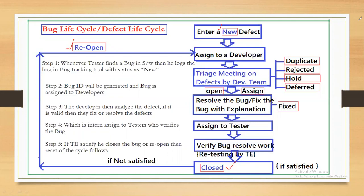One important interview question: how do you know whether developers have accepted your defect or not? We can determine this using the status of the defect. If the status is 'Open,' they have accepted it. If the status is 'Rejected,' they have not accepted it. Based on the status, we can know which stage the defect is in.